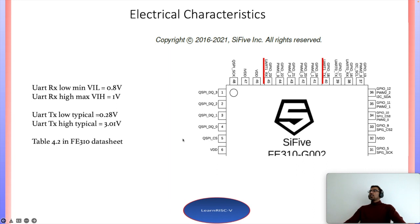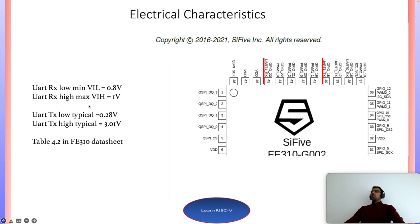For pin configuration, it's very common nowadays for any processor to have pins multiplexed with more than one functionality. On the FE310, the UART1 TX pin is GPIO 18, which can be used either as UART1 TX or as general purpose IO. For UART RX it's multiplexed with GPIO 23. The electrical characteristics are available on the FE310 datasheet in table 4.2.